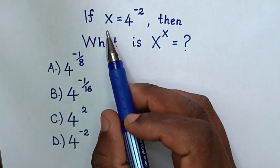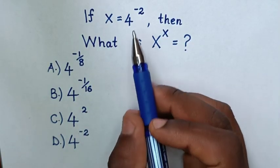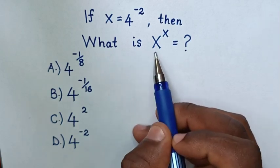Hello! If x is equal to 4 power of negative 2, then what is x power of x?